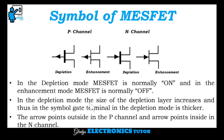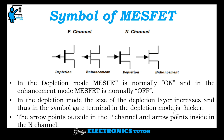In the depletion mode, the size of the depletion layer increases, and thus in the symbol, the gate terminal in the depletion mode is thicker. The arrow points outside in the P-channel and the arrow points inside in the N-channel.